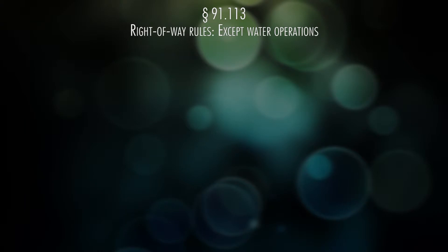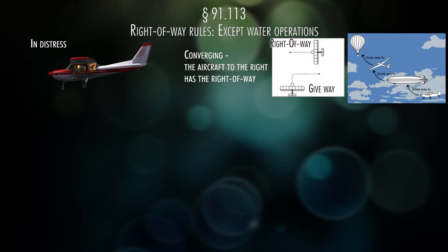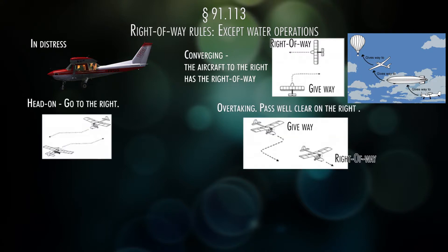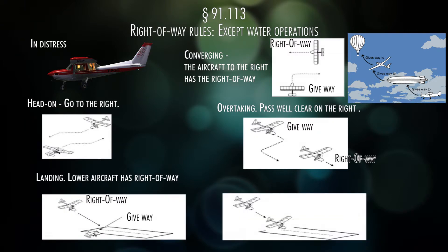91.113 talks about right of way. An aircraft in distress or in an emergency always has the right of way. If you're converging, think of it as a stop sign — whoever's to the right has the right of way. Then it goes by who is the least maneuverable: a balloon has right of way over other categories, then a glider, then an airship, powered parachute, weight shift, airplane, and rotorcraft. When landing, an aircraft on final or landing has the right of way over those operating on the surface, and if two aircraft are coming in to land, the one at the lowest altitude has priority.